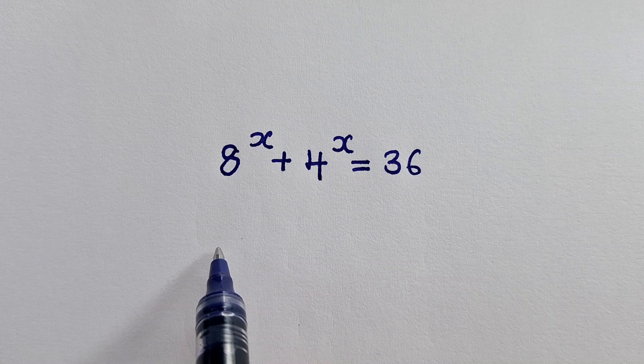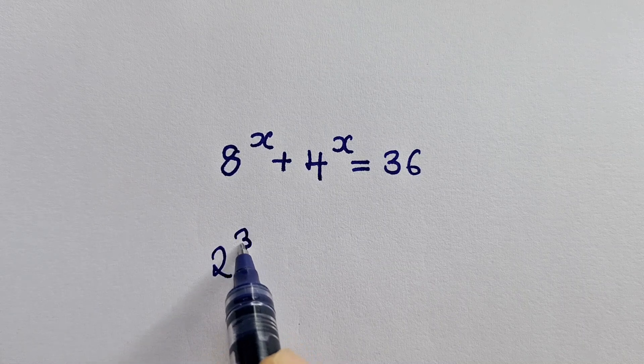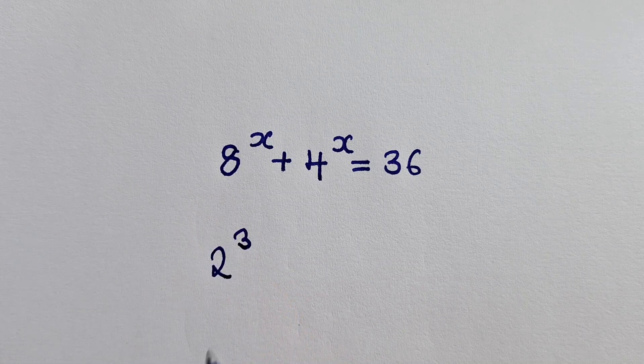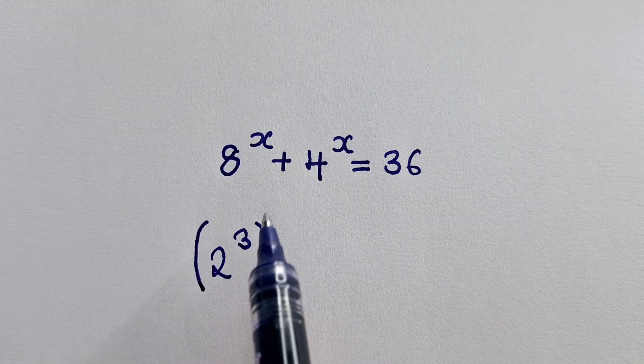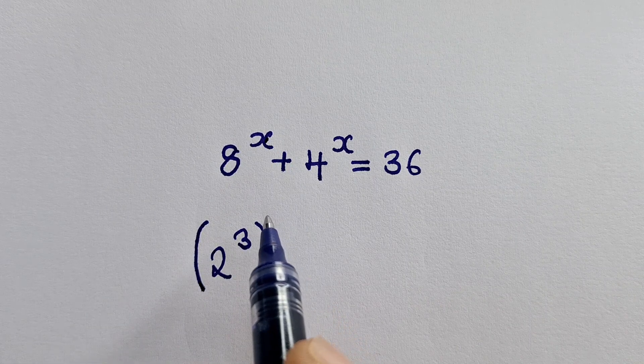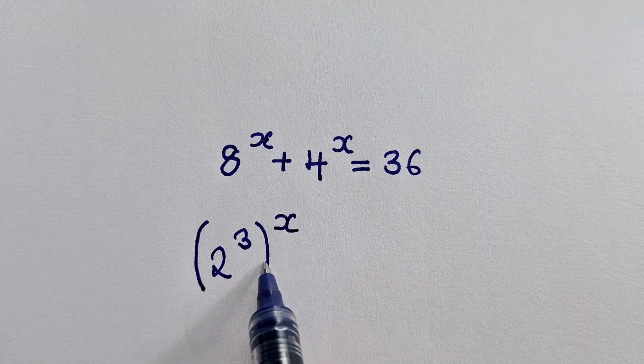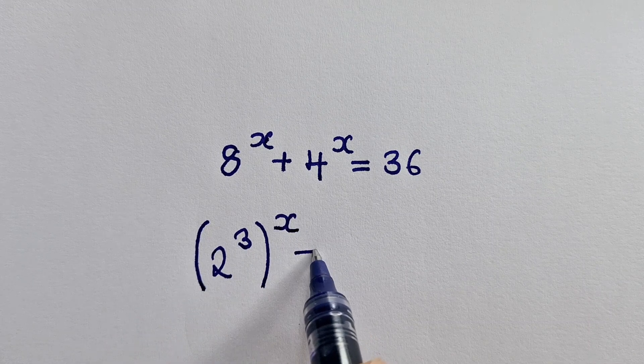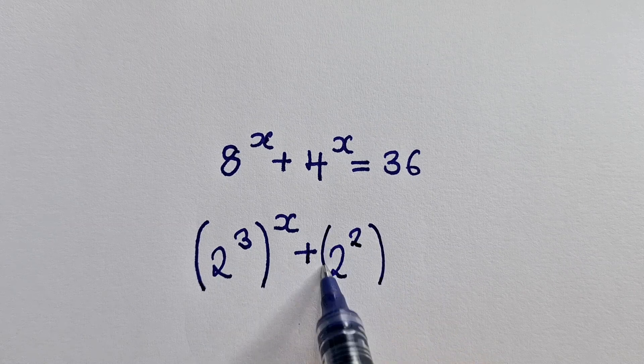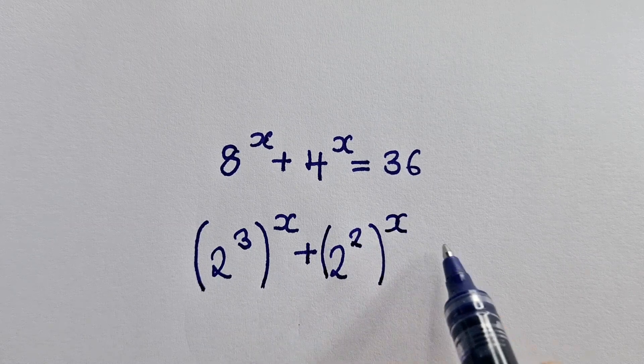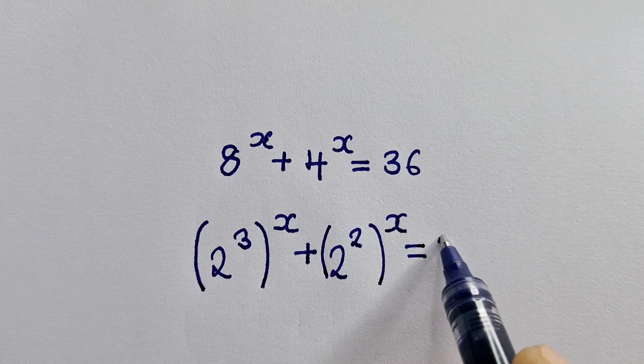So we're going to say 2 power 3. 2 power 3 will give us 8. And then we bring the brackets here. The reason why we are bringing the brackets is because there is a power x. Should I say we bring the parentheses, plus a 2 power 2 here, also parentheses there, power x, which is equal to 36.